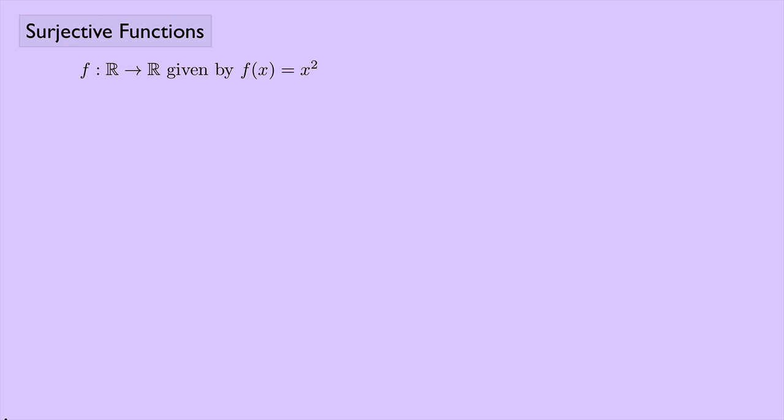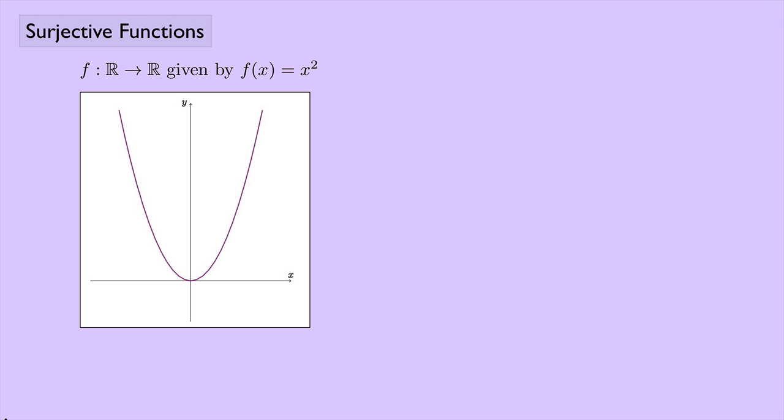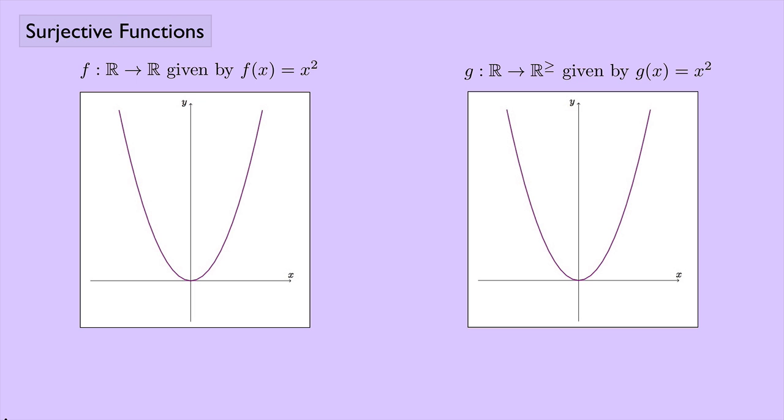Let's take a look at two different functions. The function f goes from real numbers to real numbers, given by f of x equals x squared — the parabola you've seen many times before. And here's the function g, which goes from real numbers to the real numbers greater than or equal to zero, given by g of x equals x squared. They look the same.